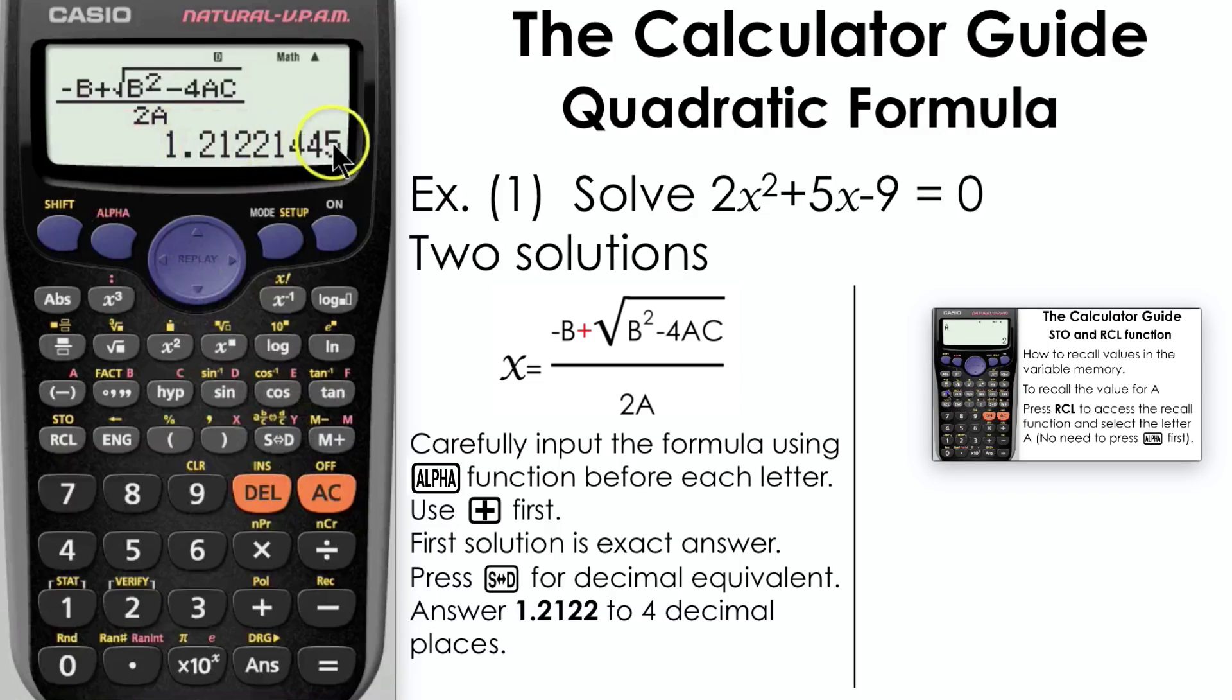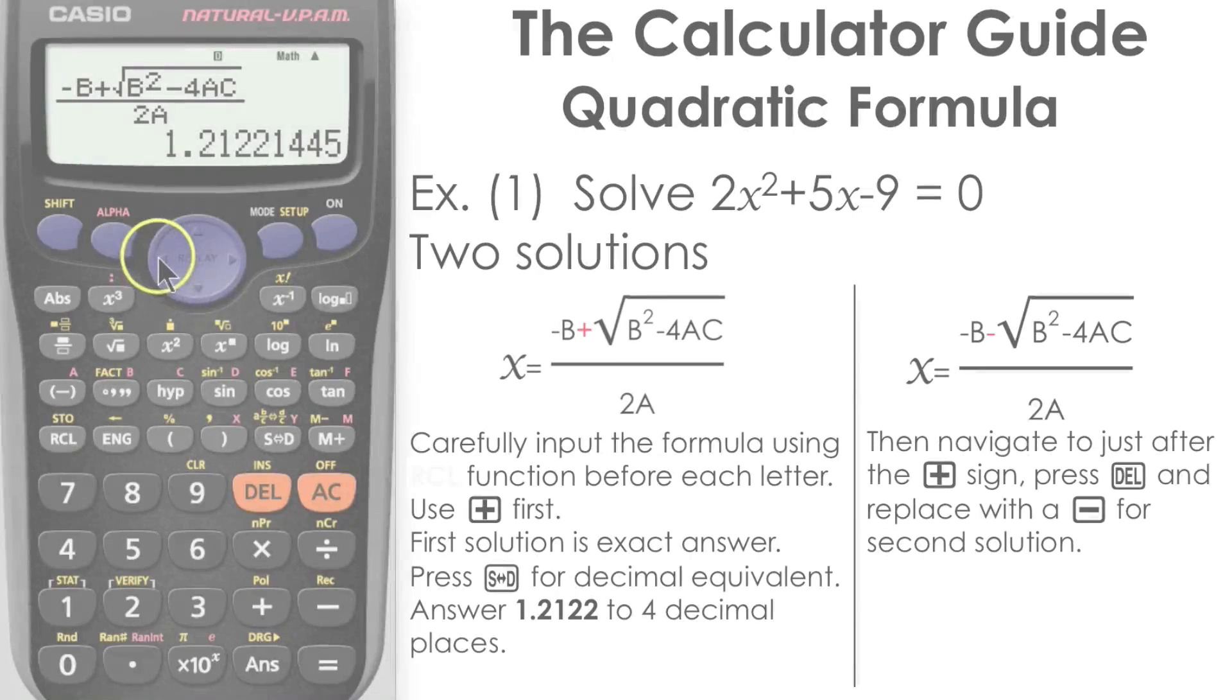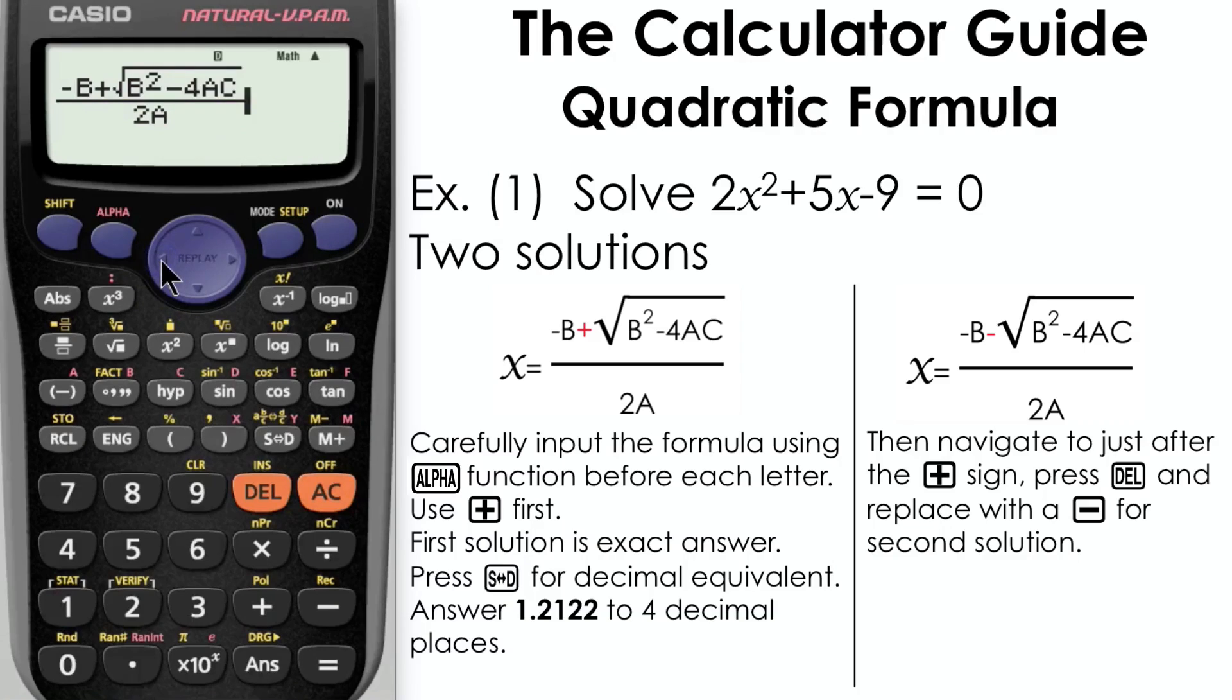We're going to find our second solution now, so navigate back so that the cursor on the calculator is just after the plus sign. Press delete and then replace that with a minus. We're okay to use the minus from the four functions in this particular case.